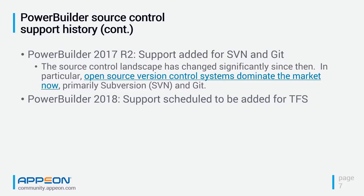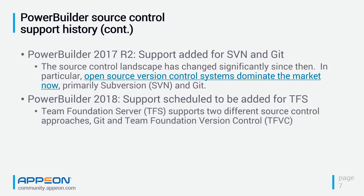In PowerBuilder 2018, there will be additional changes to source code control support — they'll be adding a native driver for Team Foundation Server. TFS itself has two different source control systems: the default when you create a new project is actually Git, so you can already use the 2017 R2 Git driver. However, if you're using Team Foundation Version Control — the legacy product Microsoft developed to support Visual Studio — you'll have to wait for PowerBuilder 2018 for a native driver.